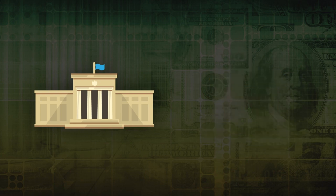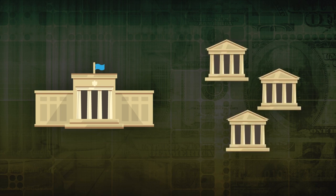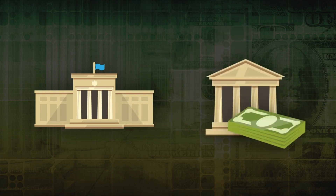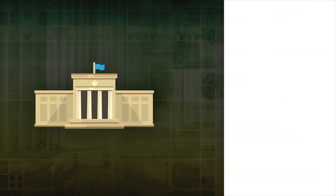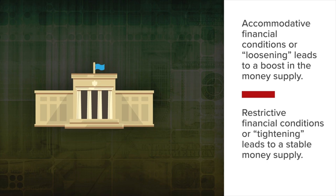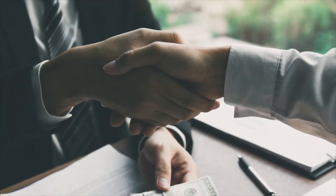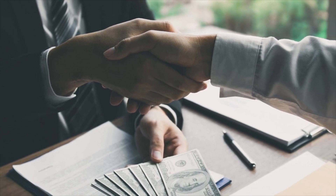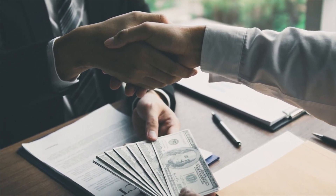If the central bank thinks financial conditions should be restrictive because the economy is running too hot, the central bank may sell bonds to banks in exchange for cash, increase interest rates, and increase the amount of reserves that need to be held by banks in order to make money less available. Accommodative financial conditions, or loosening, leads to a boost in the money supply, while restrictive financial conditions, or tightening, leads to a stable money supply. From a congressional perspective, increases in borrowing and spending will also boost the money supply, while decreases in borrowing and spending will lead to a stable money supply.